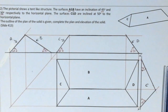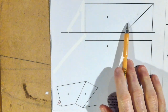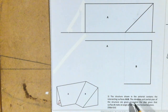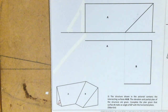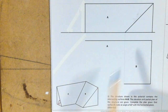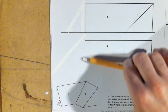Moving on to the next question: we're given a fully completed elevation and a partially completed plan view. The structure contains intersecting surfaces A and B. The elevation and partial plan are given; we need to complete the plan given that surface A makes an angle of 60 degrees with the horizontal plane. We can use that two ways — either an auxiliary view projecting out, or a simple end elevation.